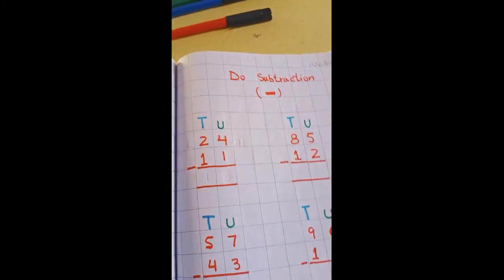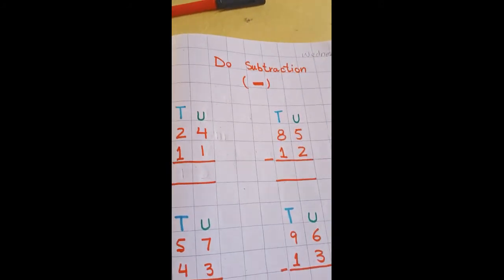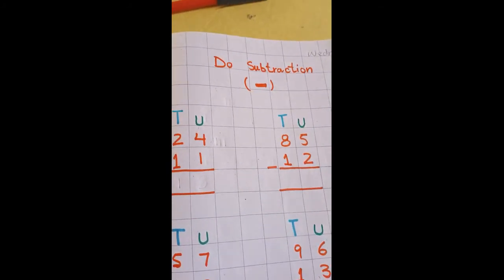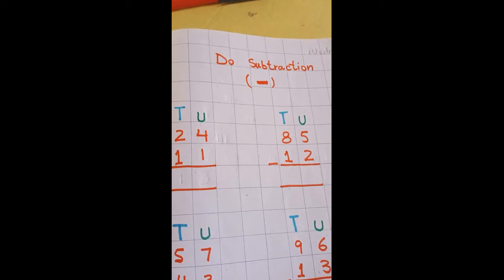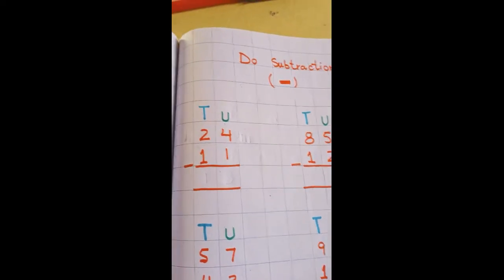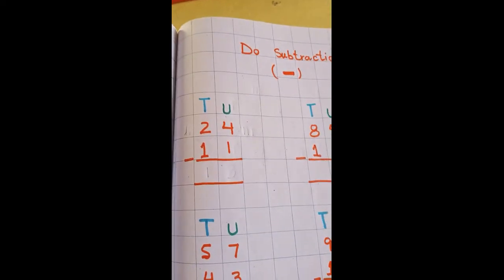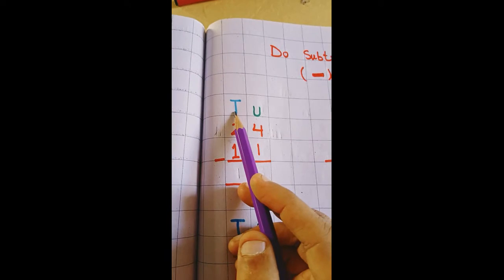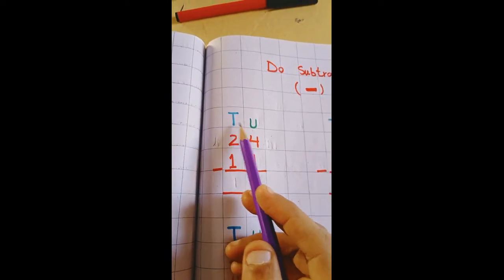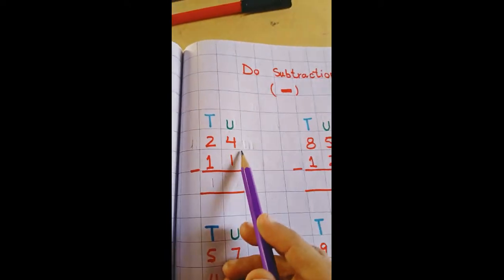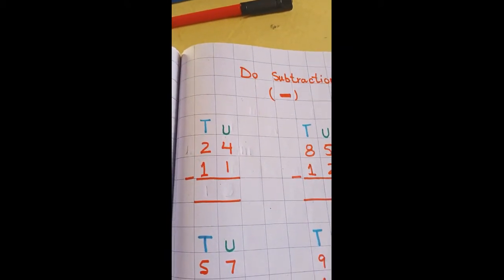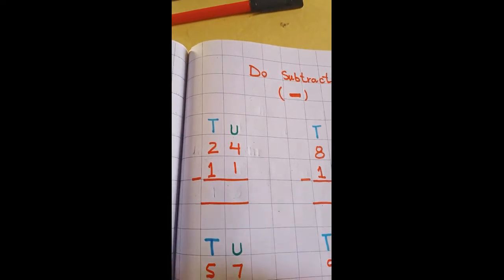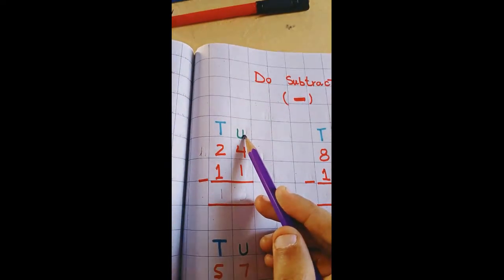This is P3 session. Now we will start our math work. Math work में आपनों का है do subtraction — subtraction means minus करना। अभी यहां पे numbers double digit में हैं — 10s and units. अब हम double digit में जब minus करते हैं तो हम कौनसे से start करते हैं — unit से।